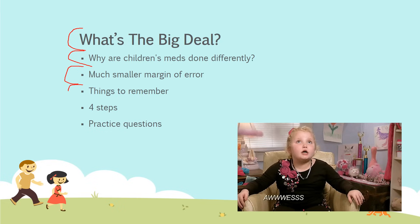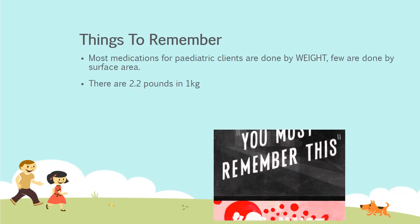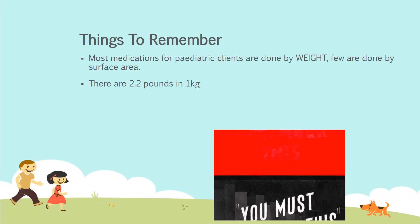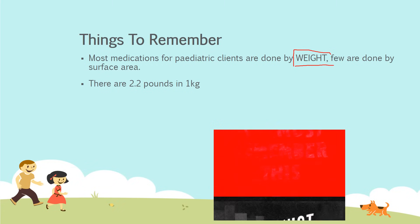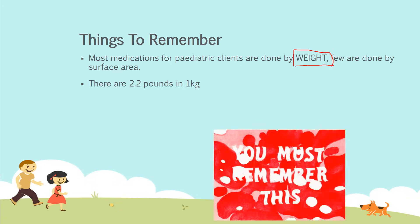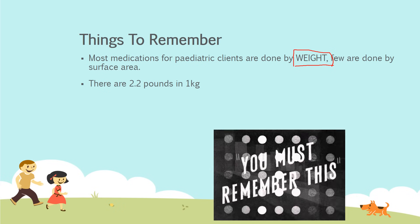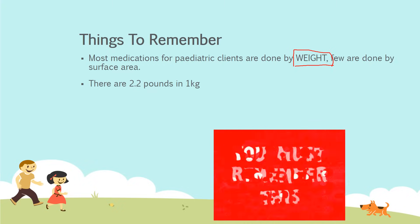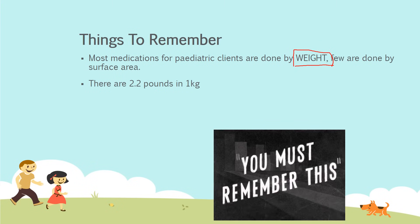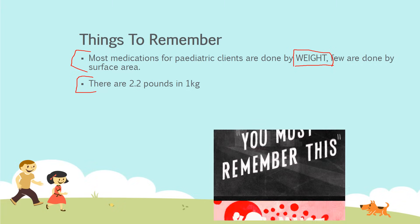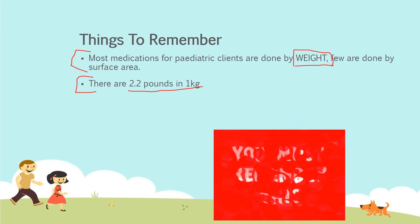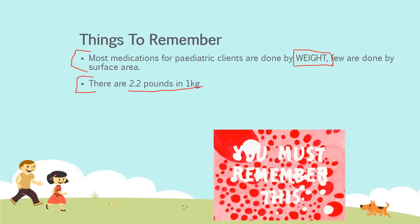In this video we're also going to discuss some things to remember, the four steps you need to know, and then run through a couple of practice questions. Most medications for pediatric clients are dosed by weight — few are done by surface area. As opposed to an adult where you'd just give 325 milligrams of Tylenol, pediatric orders give a certain amount per unit of weight per day. Another very important thing to remember: there are 2.2 pounds in a kilogram, because you'll be converting from pounds to kilograms quite frequently.